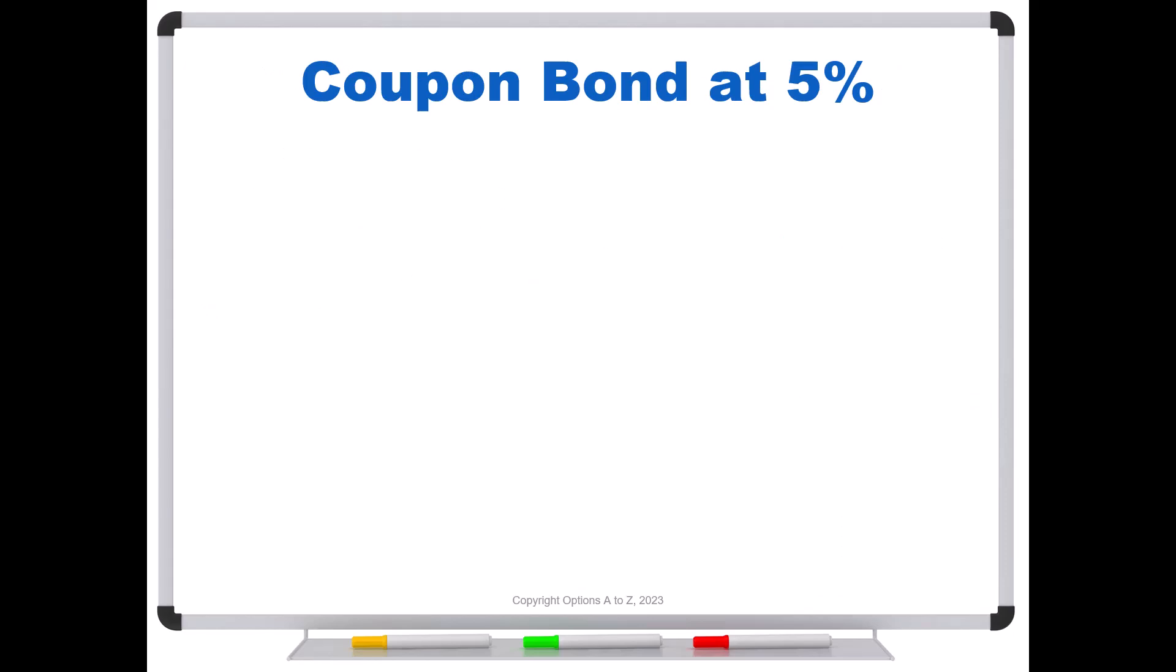Let's look at these cash flows for a coupon bond at 5%. The first cash payment we get in six months is $25. Another six months later, the second period, we get another $25. The third payment is $25, fourth payment is $25, the fifth is $25. And then the sixth period, three years from now, we receive our last $25 check, but we also get the $1,000 face back for a total of $1,025.